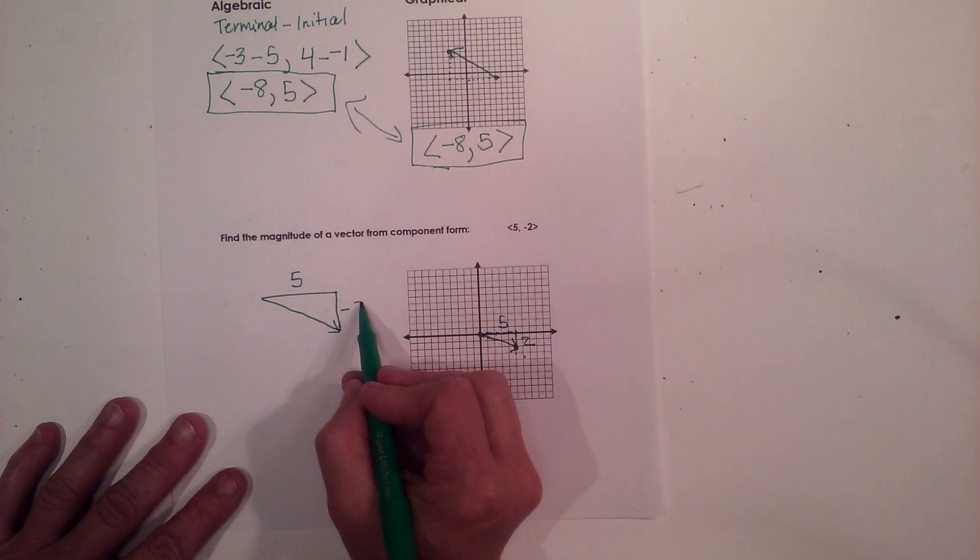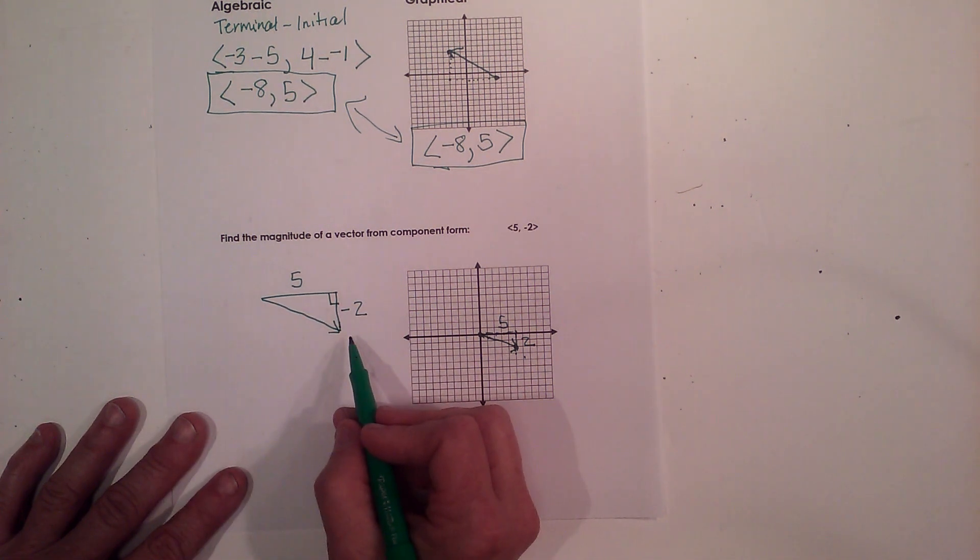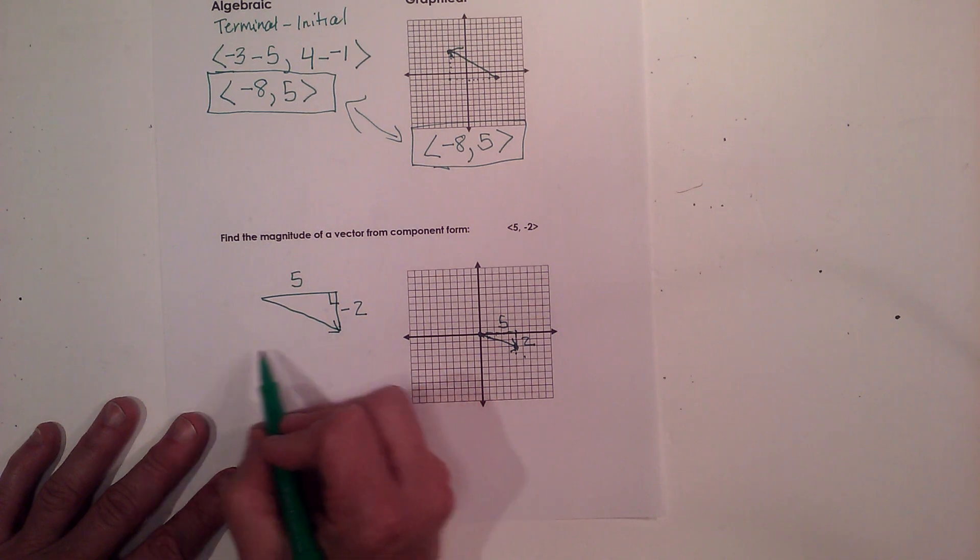So 5 and we'll go ahead and put it in as negative 2, and we have a right angle here. So we can just use the Pythagorean Theorem to find the magnitude.